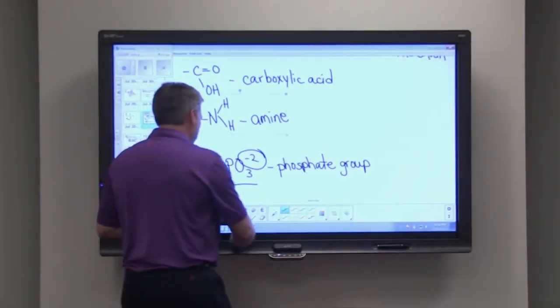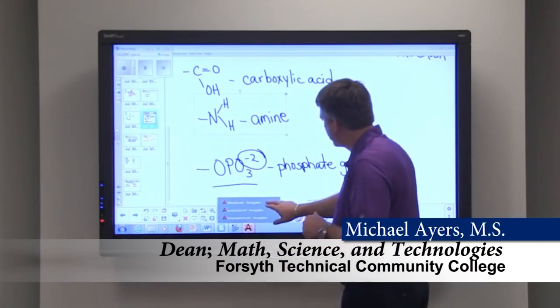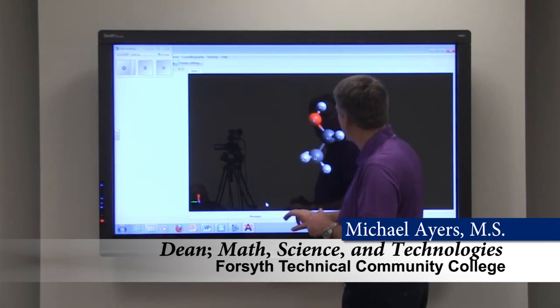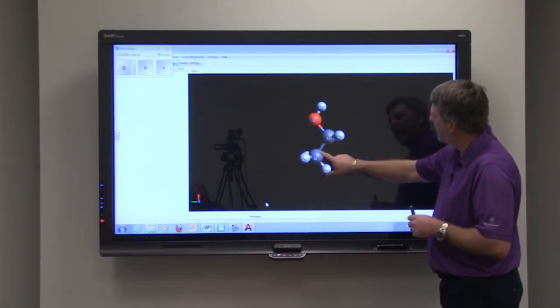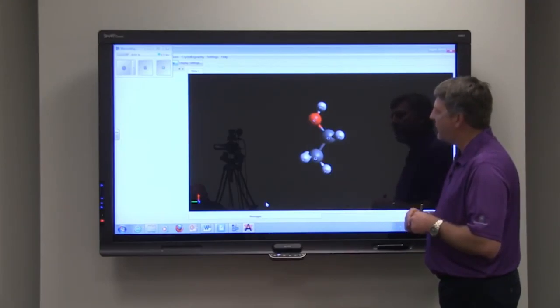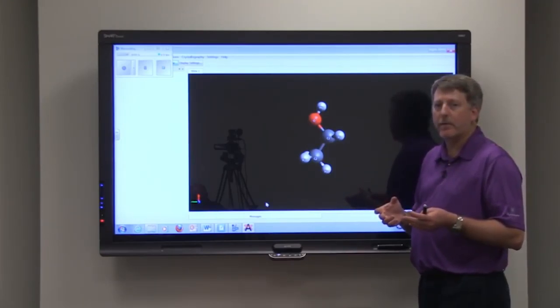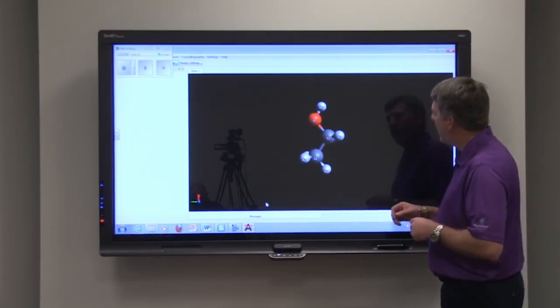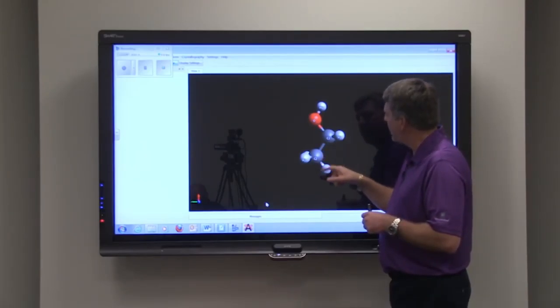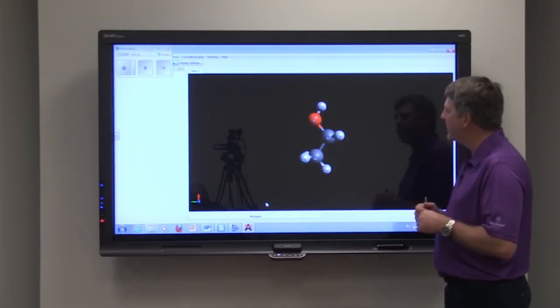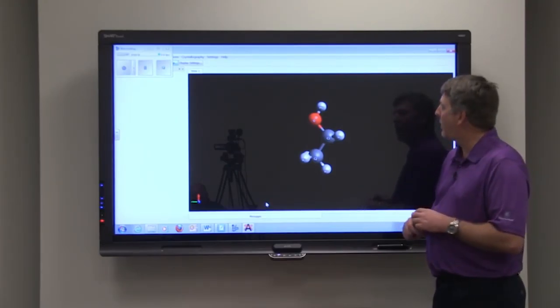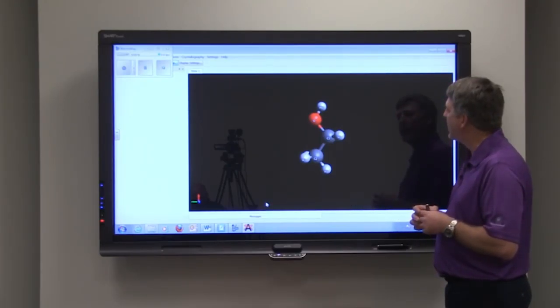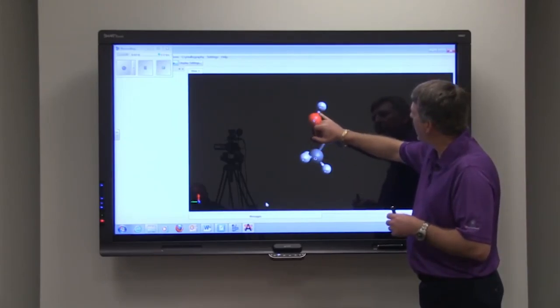Let's look at some alcohols. For example, this one has two carbons attached to it, so our prefix for two is eth. We have a single bond between the carbons, which means it would be 'ane' for the alkanes that have all single bonds.